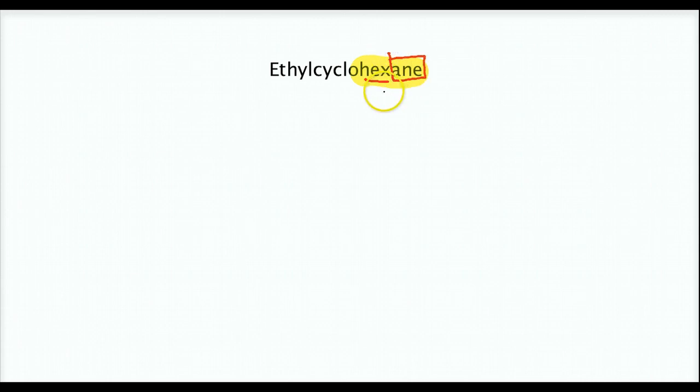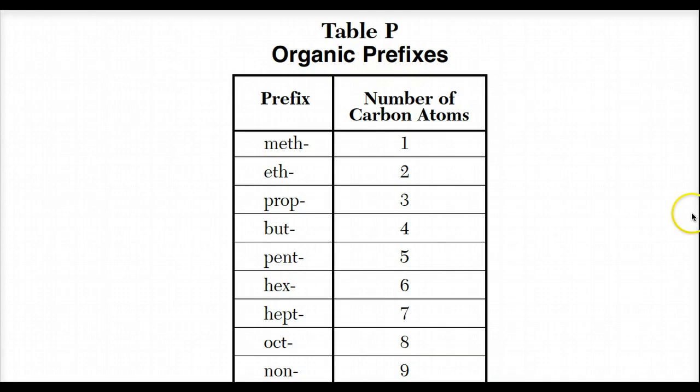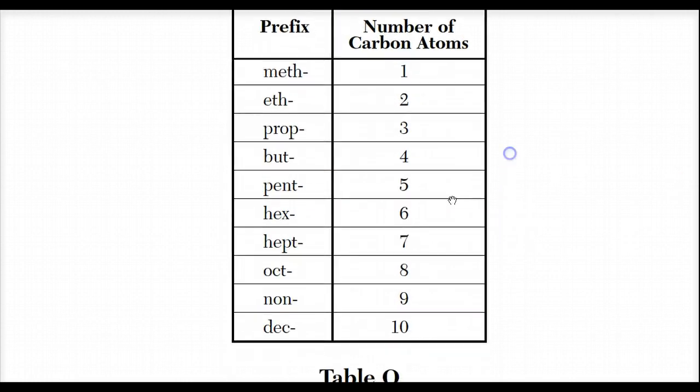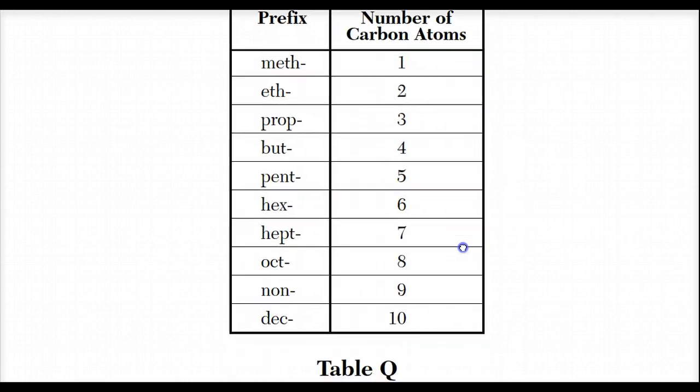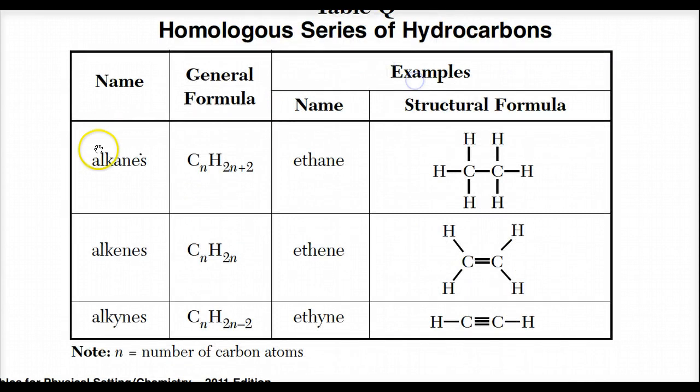If you don't know this, you have to memorize this, or if you're lucky to have the reference tables that we have, we go there. Table P is our first friend, and we look at hex and we see that hex is a 6. And the ane means we're dealing with alkanes, saturated hydrocarbons with single bonds between the carbons.